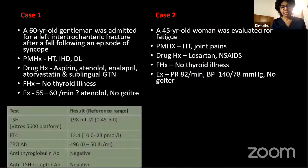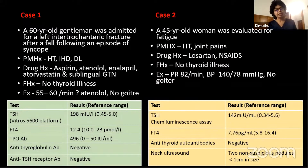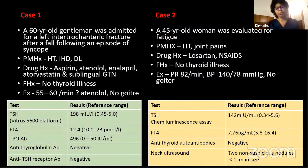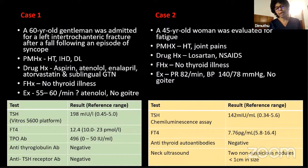Let's look at the investigations. As you can see here, both of them had elevated TSH values. The first patient's TSH was 198 and the second patient's TSH was 148 — very much elevated. Look at the free T4: both were within the normal range. The first patient showed a positive thyroid peroxidase antibody level of 496, and the second patient's antibodies were negative. She also had a couple of tiny thyroid nodules.